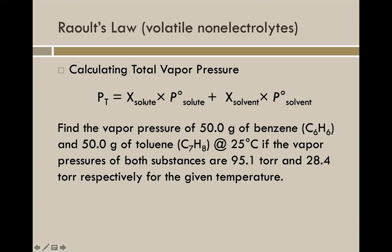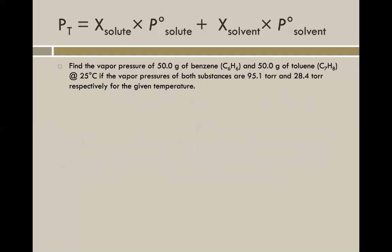We would need to find the mole fraction of both pieces, and then we're going to multiply by their corresponding original pressures. Because we've diluted them slightly, their individual pressures will be lessened, but by finding what fraction each occupies in the solution, we can figure out how much is going to be present. We can actually calculate based upon this formula here at the top.